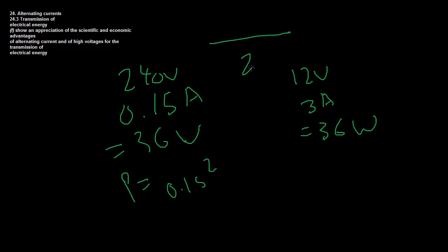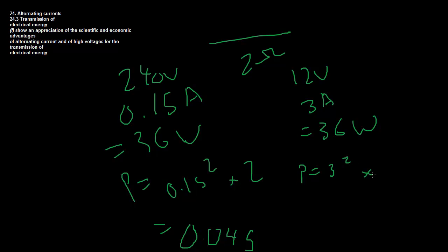What's the power dissipation in the 240-volt, 0.15-ampere case? Power dissipated is I² × R = 0.15² × 2 = 0.045 watts. Now look at the 12-volt, 3-ampere case: P = 3² × 2 = 9 × 2 = 18 watts. Look at the difference between 0.045 and 18 — that is 400 times more power loss, just because the power is delivered at a lower voltage.